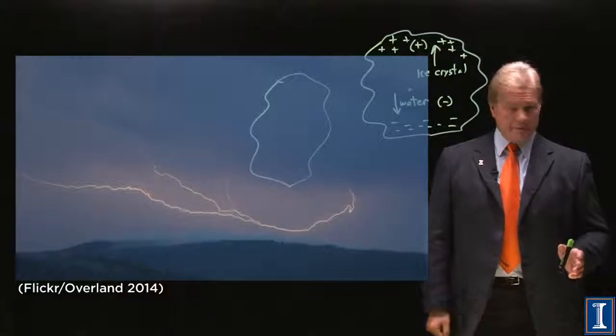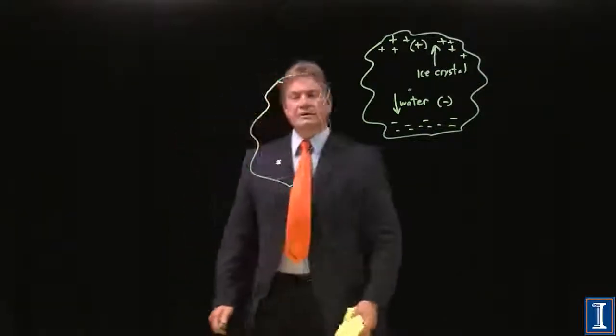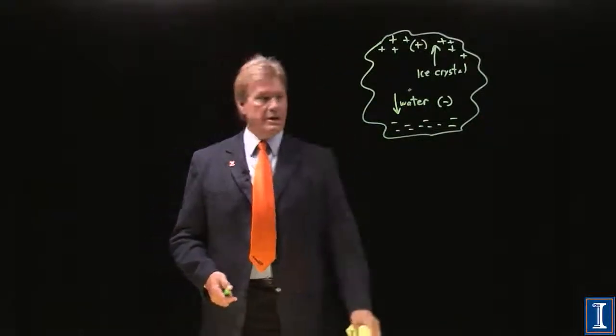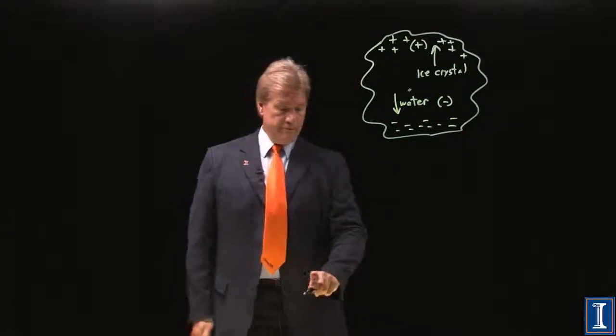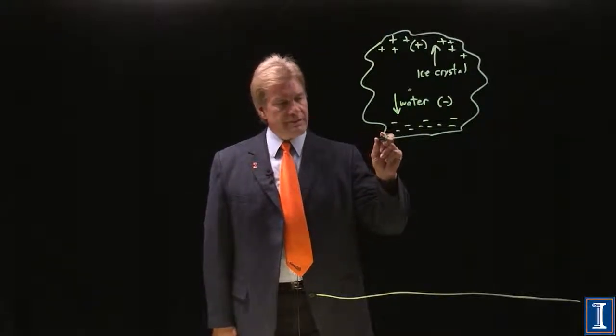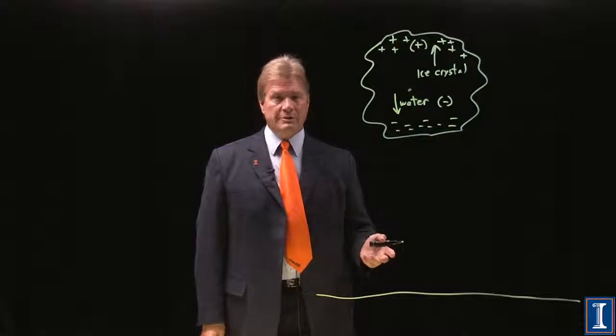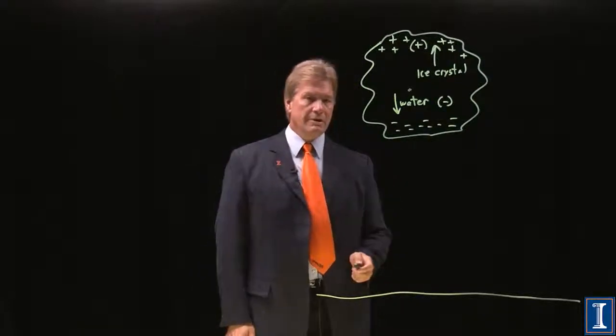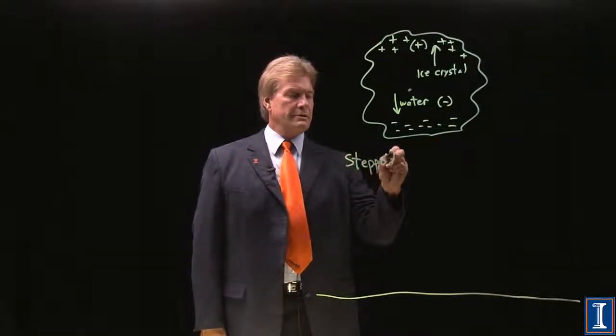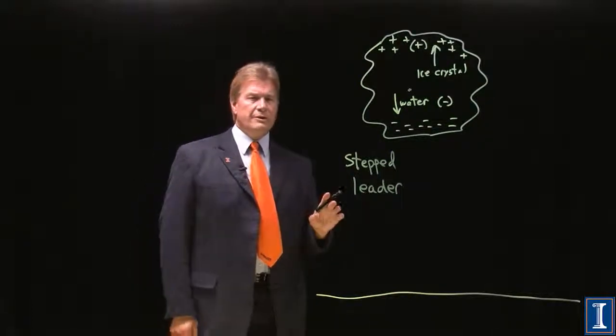So there's a few more things going on. Let's say we don't have the cloud to cloud lightning, but we have the more traditional, even though less often occurring, cloud to ground lightning. Here's the cloud. The voltage is not high enough to instantaneously break down this maybe mile or two miles or several kilometers of distance between the cloud and the ground. And what happens instead is something called a stepped leader.